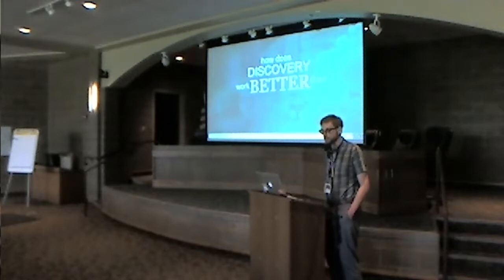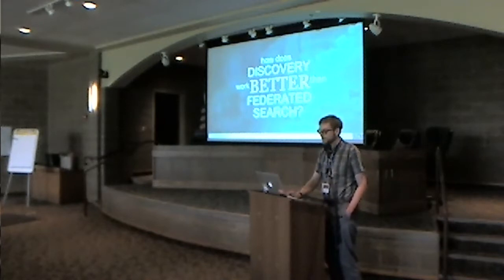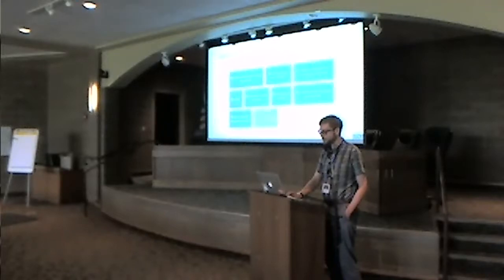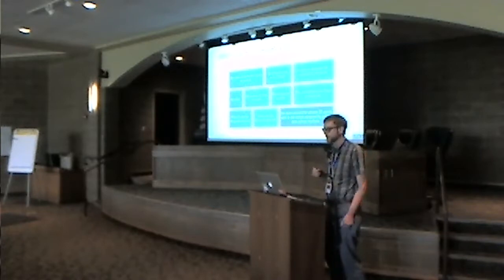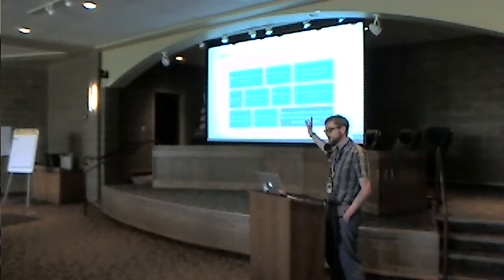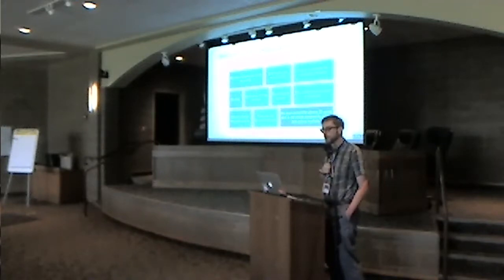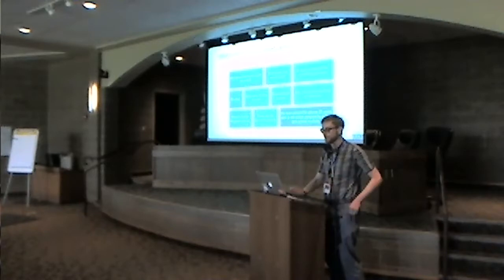One thing I still hear a lot is, 'Oh, that's just federated search — we looked at that several years ago and weren't impressed.' But EBSCO Discovery Service is different from federated search. With federated search, it's going out in real time and pinging different services, so it's slow, the relevancy is very limited, and facets are limited for the same reason. With EBSCO Discovery Service, we work with all those 20,000 publishers to pool their content into a central index, which allows us to return results faster and apply relevancy ranking across all those consistent assets.